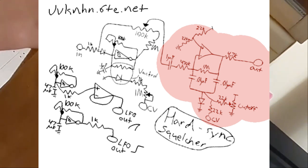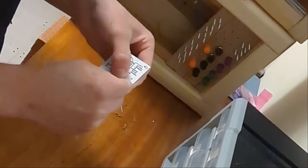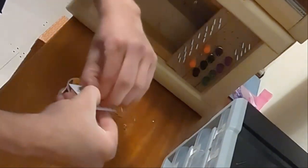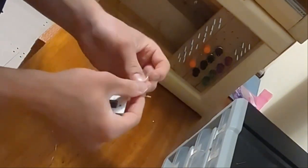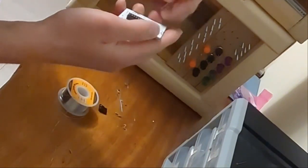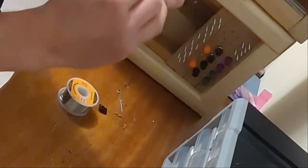So you have that voltage controlled filter, and going into it is the input signal and the output of a square wave oscillator that are mixed with a potentiometer that you just fade between them. But the thing with the voltage controlled oscillator, the square oscillator, is that it is being hard synced to the input signal.